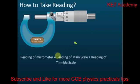To take a reading, the reading of the micrometer is equal to the readings of the main scale plus the readings of the thimble scale. This is the thimble scale, this is the main scale. So the reading equals the main scale plus the thimble scale.